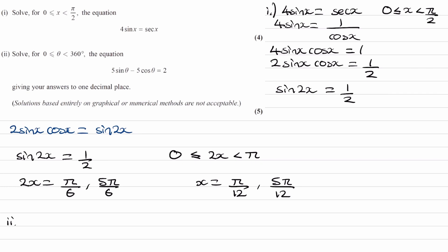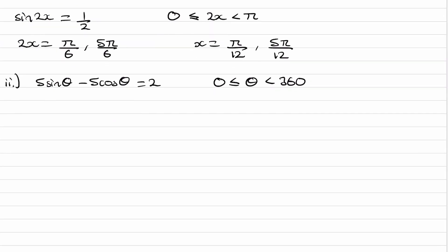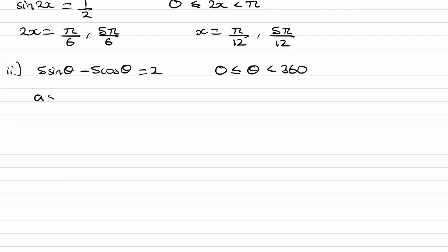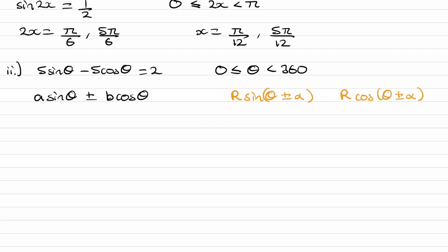For part 2, we're solving 5 sine theta minus 5 cos theta equals 2 between 0 and 360. Whenever we have something of the form A sine theta plus or minus B cos theta, we want to express this in the form of either R sine theta plus or minus alpha, or R cos theta plus or minus alpha. This is useful because it converts two trig functions into one, and if we have a single trig function equal to a number, we can solve it.